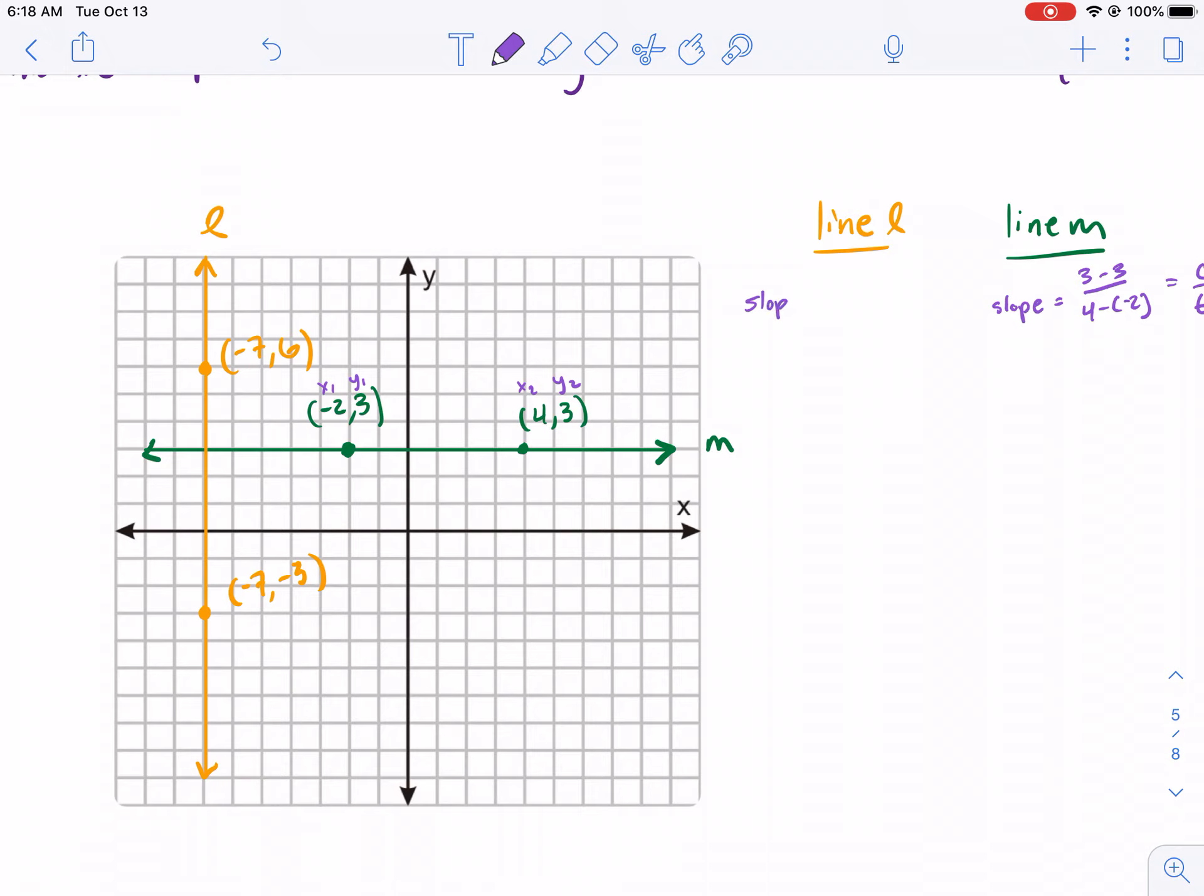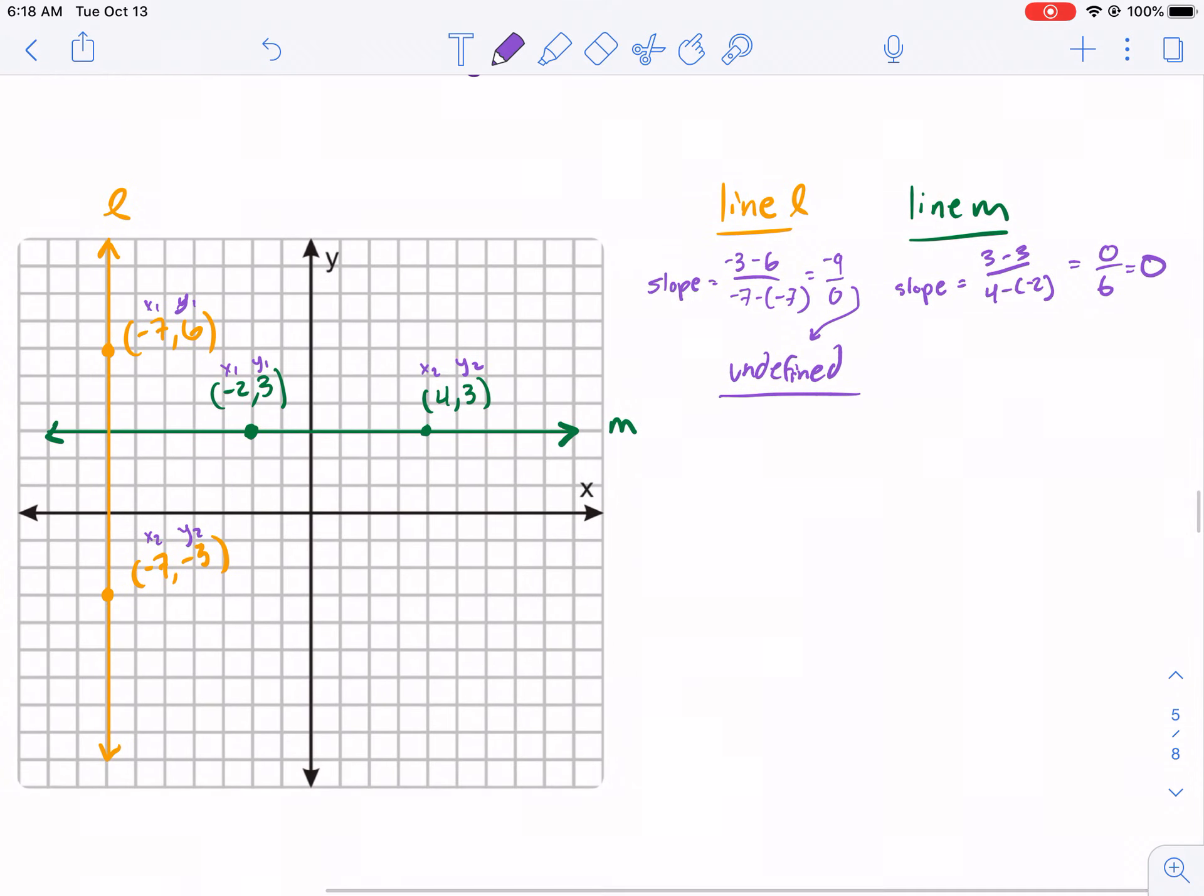I guess I'll go ahead and do slope for line L also. X1, Y1, X2, Y2. So, I get negative 3 minus 6 in the top. And in the bottom, I get negative 7 minus negative 7. So, I get negative 9 over 0. This is undefined because we divided by 0. Don't mistake this for 0. So, I get undefined here. Now, these are kind of two special cases, especially line L.